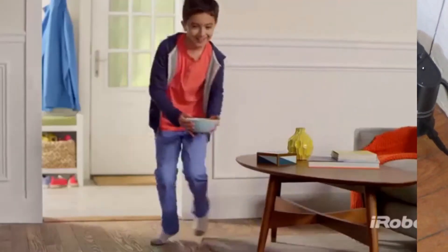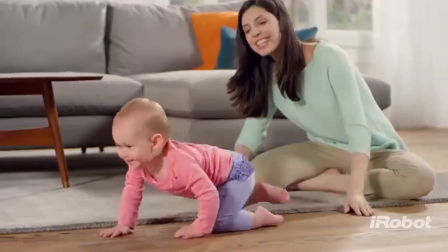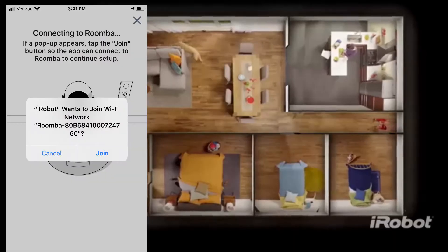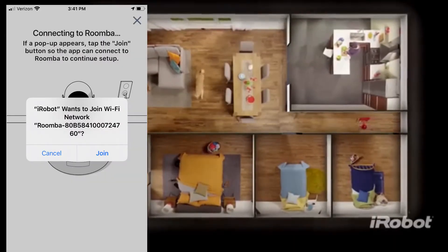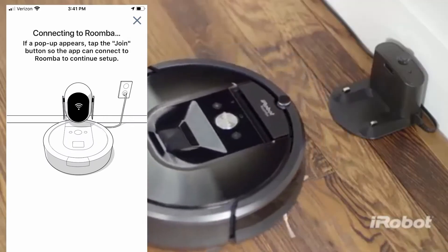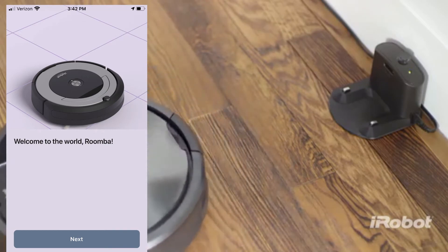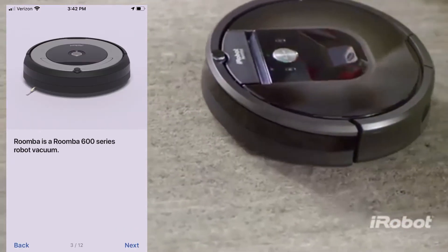But ultimately, we want to control this with our voice and our Alexa devices. Still a few more steps to go. Here we go. Okay, connect to your network. Yeah, we just did that. Connect Roomba. And now it is going to walk you through a series of advice.